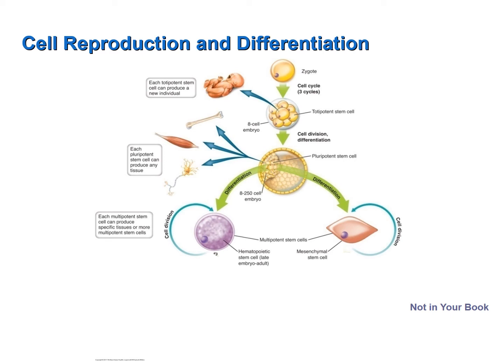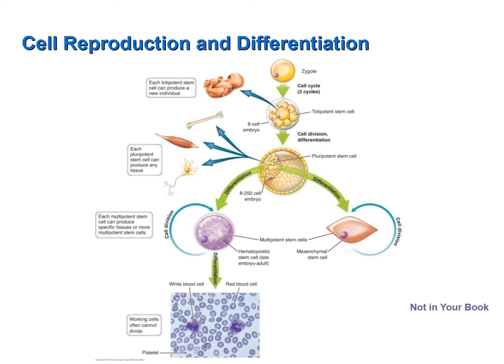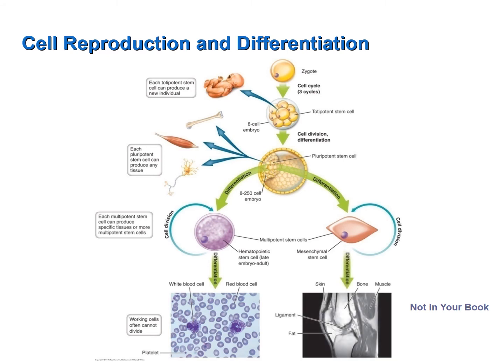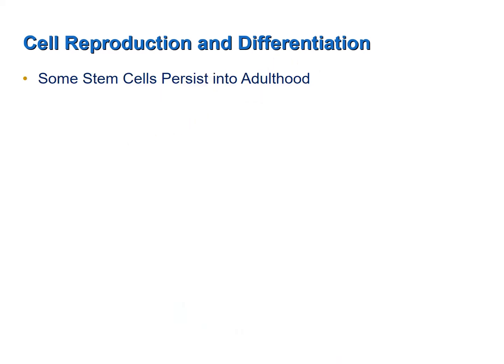Hematopoietic stem cells can differentiate and form any of the cells of the blood — white blood cells, red blood cells, as well as platelet-forming cells. Mesenchymal stem cells can form muscles, ligaments, tendons, and fat cells. These working cells of the blood, bone, and muscle often cannot divide or have very limited ability to divide. Some stem cells persist on into adulthood.